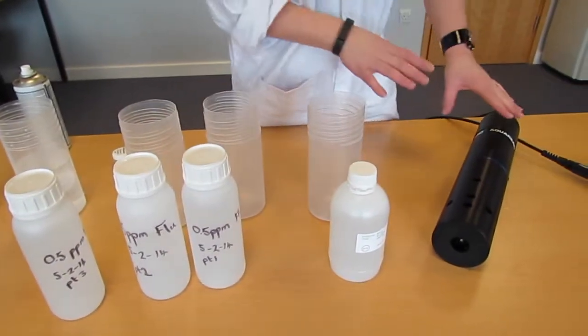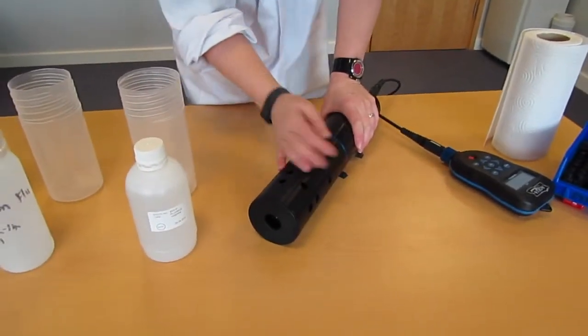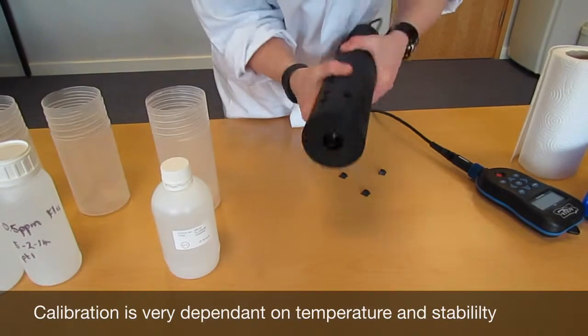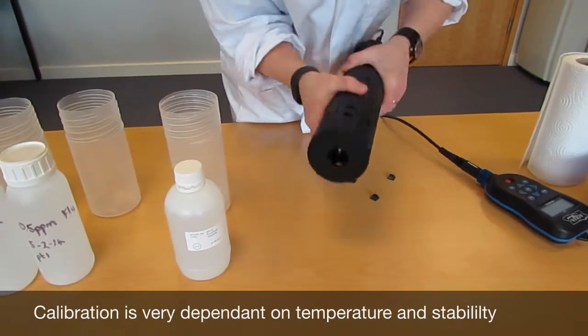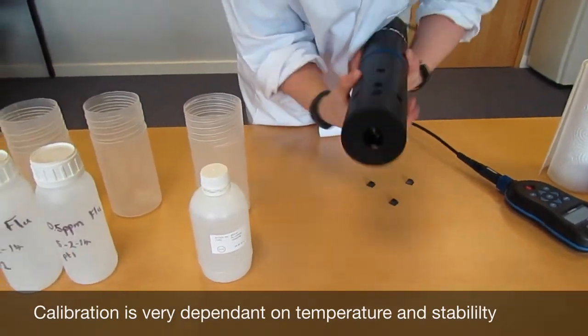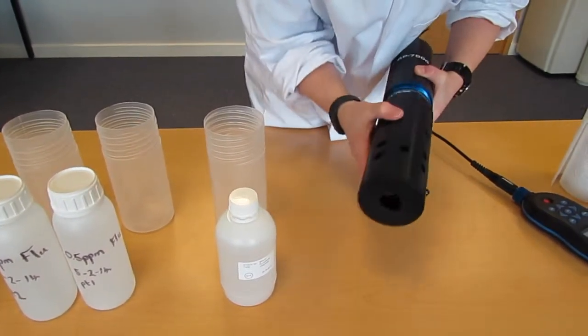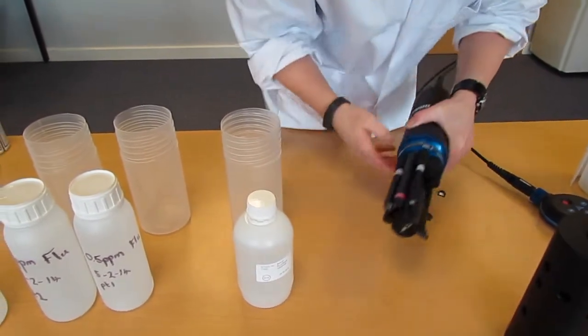So the first thing we need to do is to remove the sleeve from the probe. This is so that when we do 0.3 there's not so much thermal mass in the probe. It allows the temperature to come down a bit quicker.